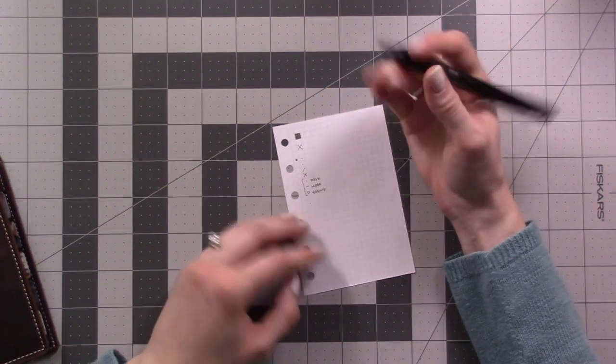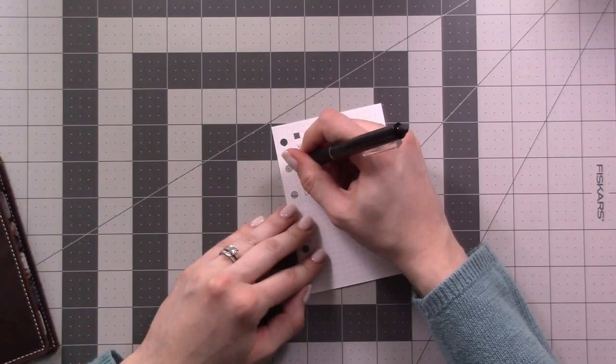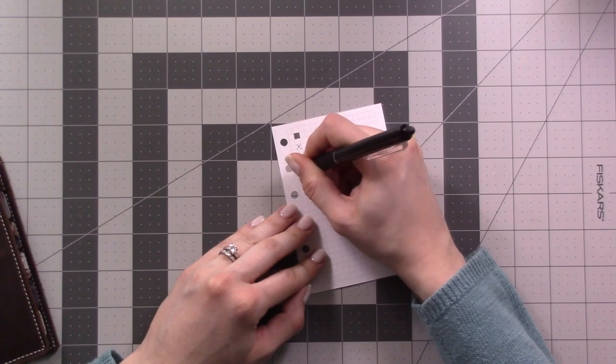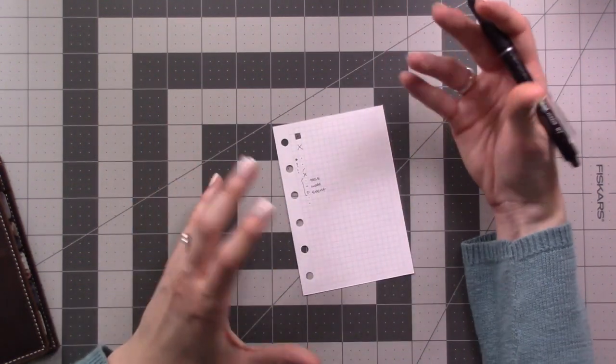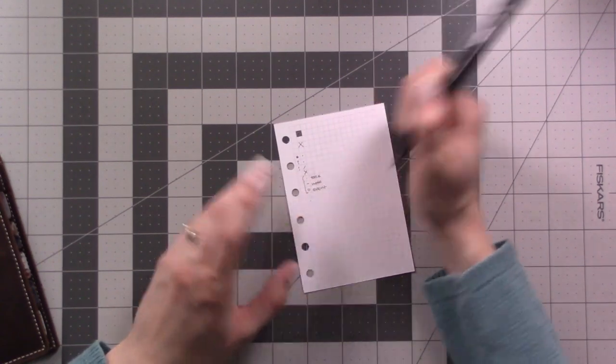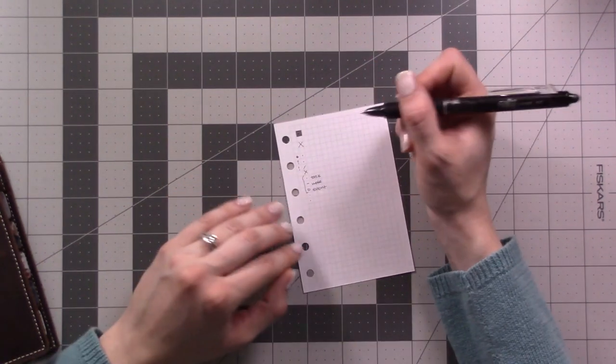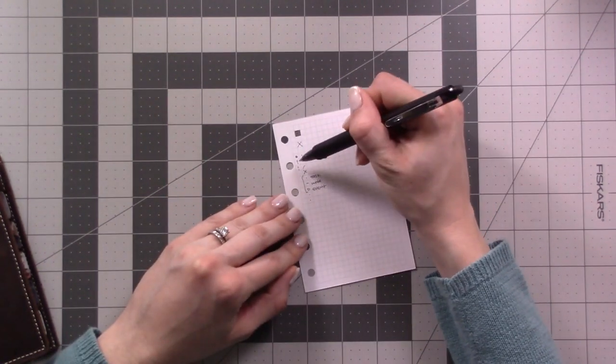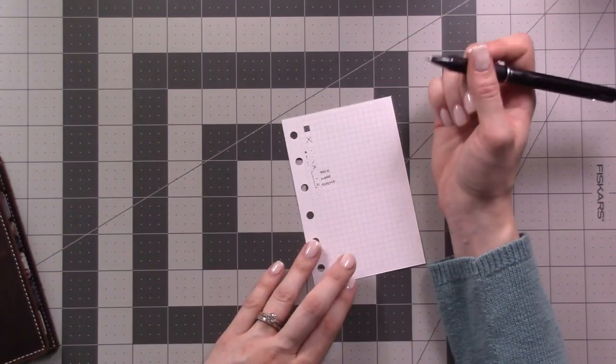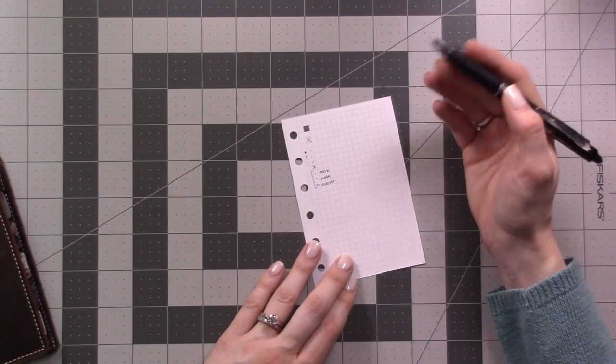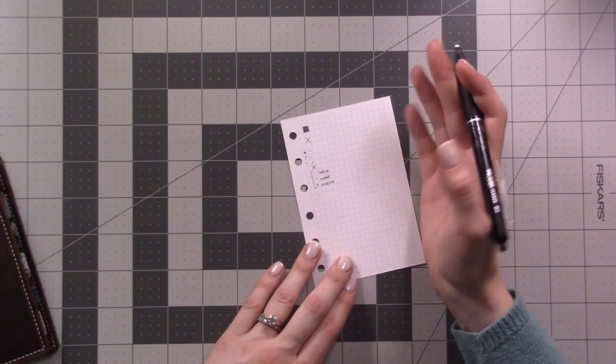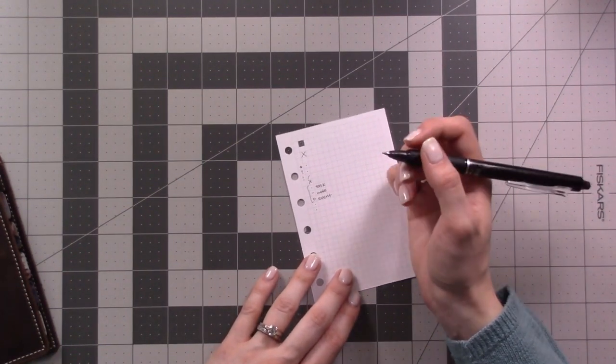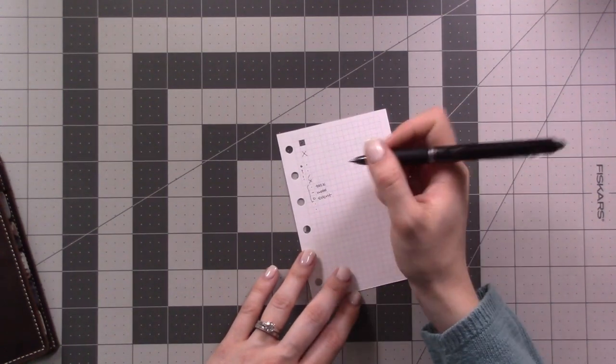You can basically do whatever you want. You can do a question mark for research or an exclamation point for whatever you want it to mean. Some people get really intricate with them but I tend to really just use a couple. Another thing about these bullets is you can really do whatever you want, whatever works for you. So early on when I first started bullet journaling I actually added an extra bullet to the system.